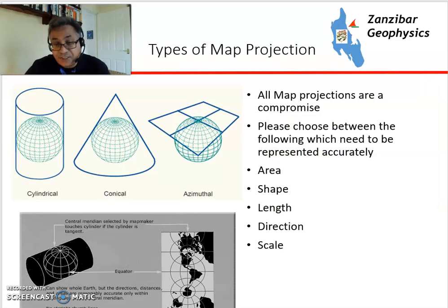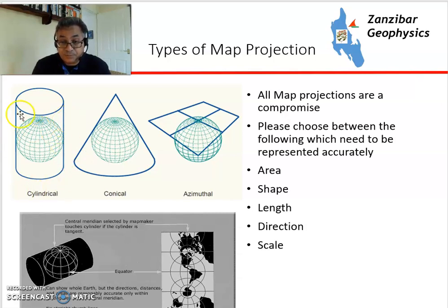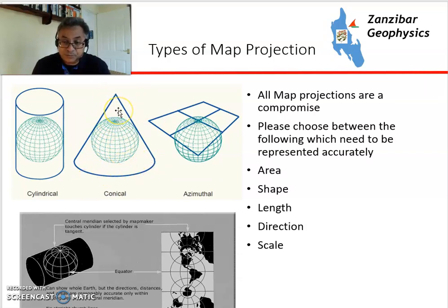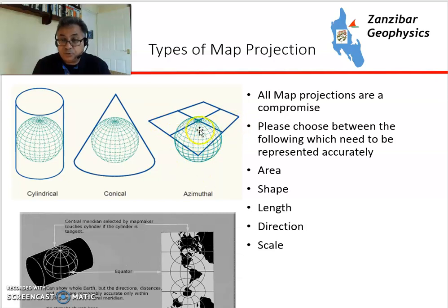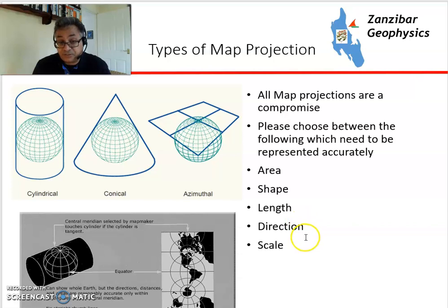There are three main types of projection. You have cylindrical, where you effectively wrap a cylinder around your spheroid. Conical, where you take a cone around your spheroid, generally based from a pole. And azimuthal, where you project a flat plane from a particular point. All projections involve compromises based on area, shape, length, directions, and scale.